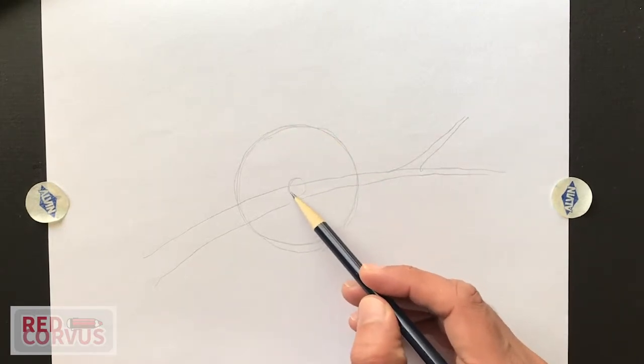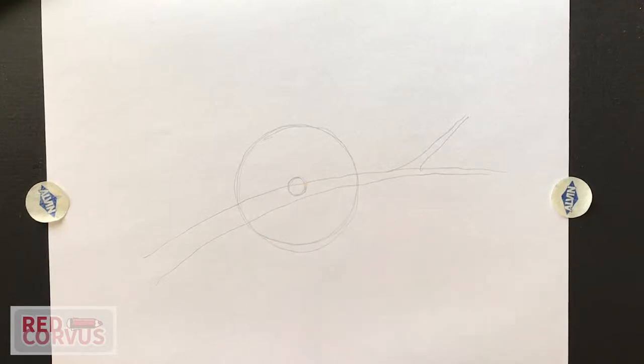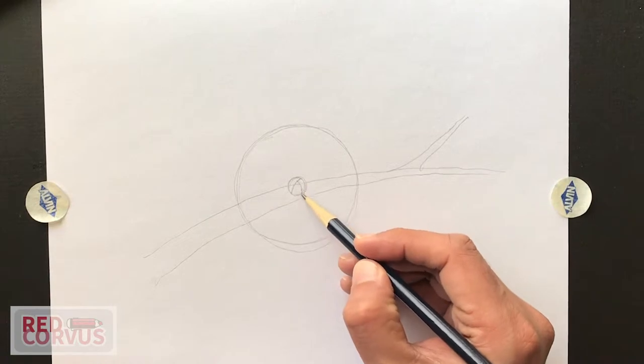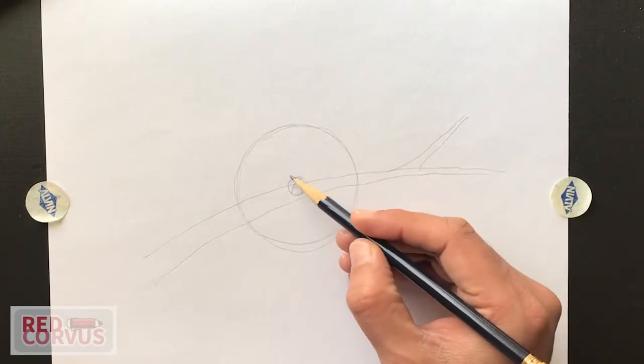Once we've done that, what we're going to do is draw a smaller circle right in the middle. And this will be the bud of the flower where we will start drawing. Then divide the circle into three sections just like this.